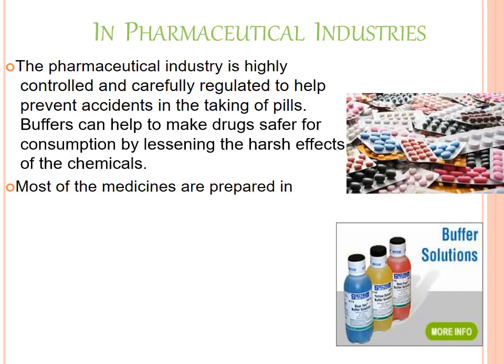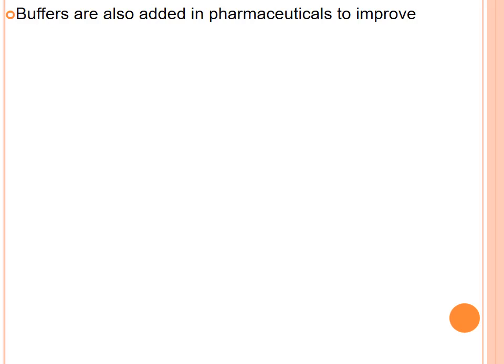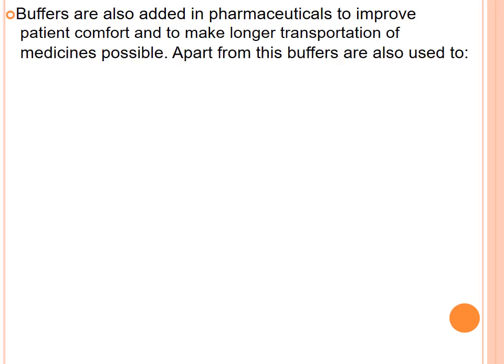Most of the work of pH regulation in industry involves buffers. Buffers can help to make drugs safer for consumption by limiting the harsh effects of chemicals. Buffers are also added in pharmaceuticals to improve patient comfort and to make longer transportation of medicines possible.